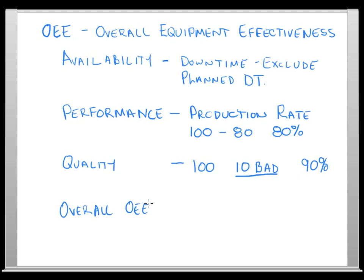Overall OEE equals Availability times Performance times Quality. You're taking into account downtime — time you should have been running but weren't — performance, whether you're running at your full rate, and quality, whether you're producing 100% good product.